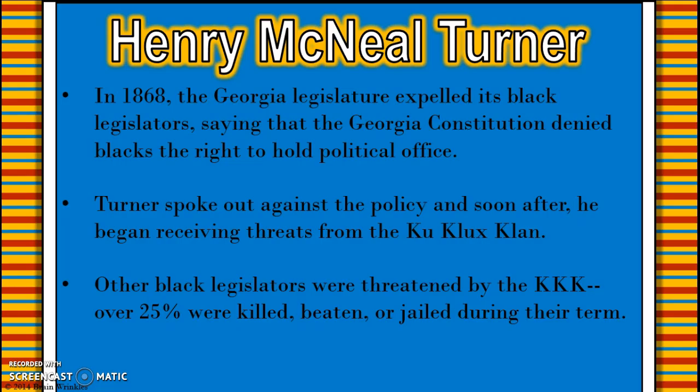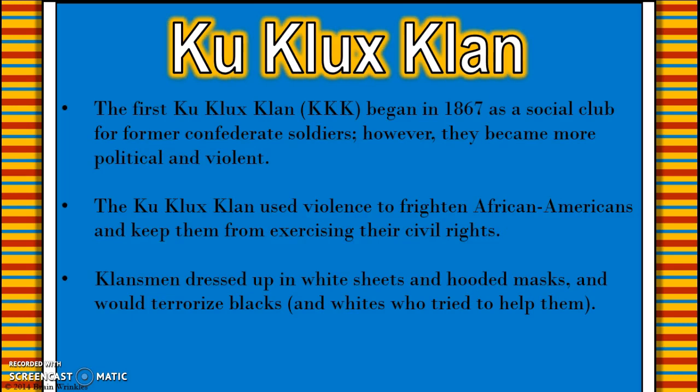In 1868, the Georgia legislature expelled their black legislators, saying that the constitution denied them the right to hold political office — they could vote but couldn't hold office until the 15th Amendment was passed. Turner spoke out against this policy and received many threats from the Ku Klux Klan. Other legislators were also threatened by the KKK, with over 25 percent of them being killed, beaten, or jailed during their term. The KKK started as a social organization for former Confederate soldiers but later became political and violent. They used violence to prevent African Americans from exercising their civil rights, particularly their voting rights, dressing in white sheets and hooded masks to terrorize blacks and any whites who tried to help them.